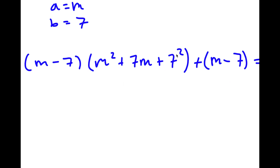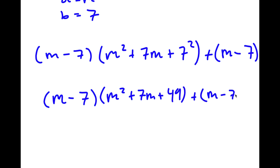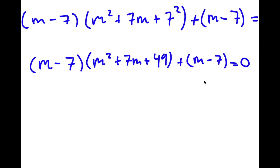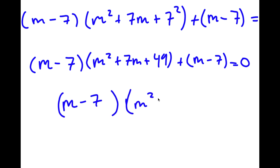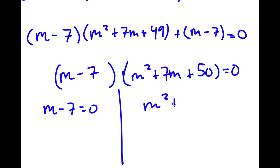Since 7² = 49, I can factor out (m - 7). The second factor becomes m² + 7m + 49 + 1, which equals m² + 7m + 50. So this gives me two equations: m - 7 = 0 and m² + 7m + 50 = 0.